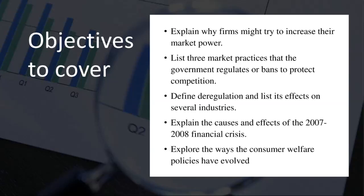Next, we'll explore three practices regulated or banned by the government to protect competition. Antitrust laws are a crucial tool used by governments to ensure fair competition and prevent monopolistic behaviors. Three main practices regulated or prohibited include price fixing, which occurs when competing companies agree to set prices for their products or services, manipulating market prices to their advantage. Price fixing is illegal and anti-competitive.